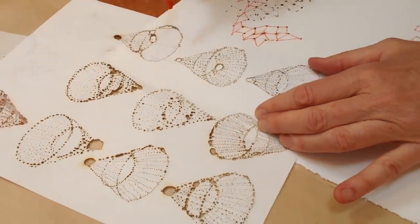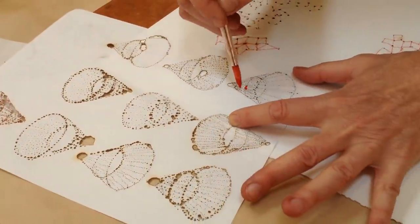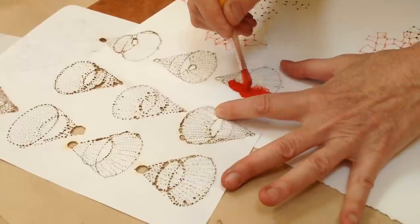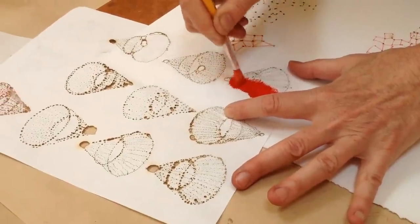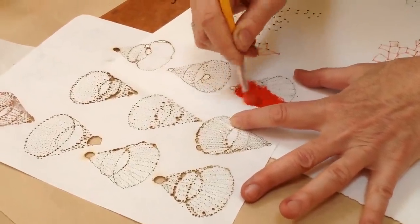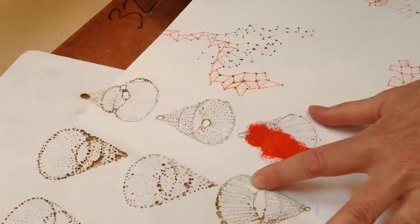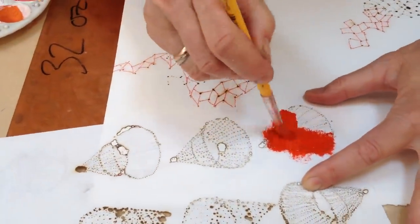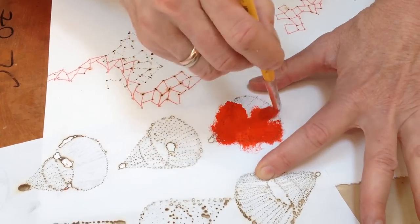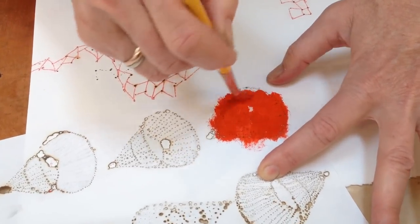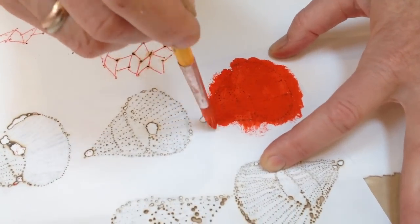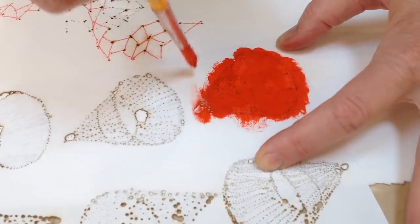My associations as I'm working are to microscopic forms, macroscopic forms as in a map-like view of the earth, and a different kind of map, a map of the synapses of our neurological system. There's something about working with electricity that reminds me very viscerally of my own nervous system.